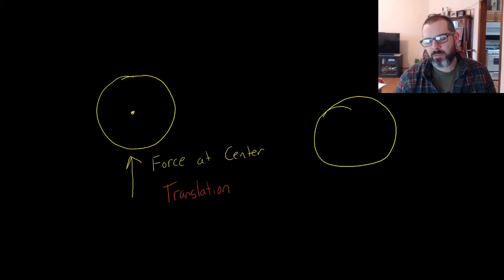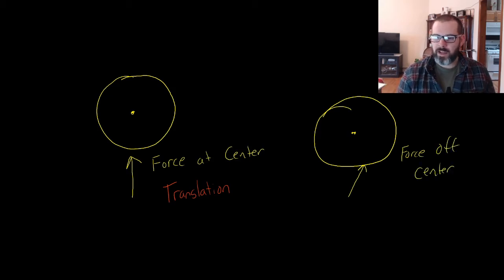And that was kind of the first thing that I showed you with the basketball. If I have the basketball and I apply a force directed away from the center slightly, but up still. I'm going to say force off center. That caused both translation and rotation.